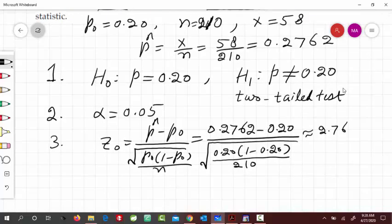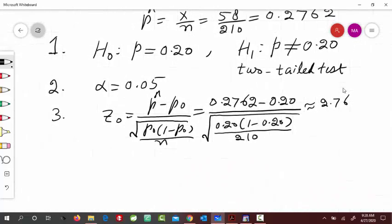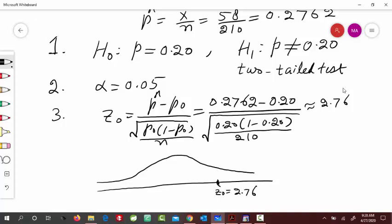And next we have to compute p value. Because it's a two-tailed test, let's draw this normal curve. This is, for example, this is a 0 value that is 2.76. And because it's two-tailed, we would have to have the same area on the left tail. Because of symmetry, this would be negative 2.76. p value is actually the area in the tail, area over here and then area over here, the sum of these two areas.